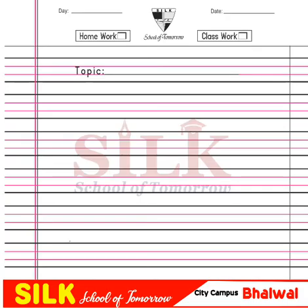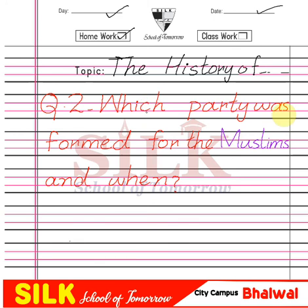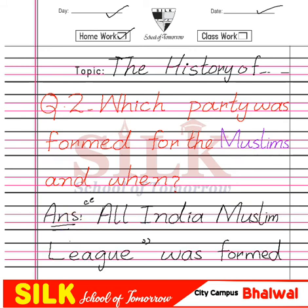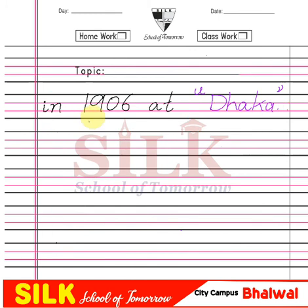Now students, open your notebooks of SST. Write the date and take the homework. The topic is The History of Pakistan. We are going to start question number 2. Question number 2 is: Which party was formed for the Muslims and when? Which party — jama'at — was formed for the Muslims and when? So, from what we just read, which party was formed?